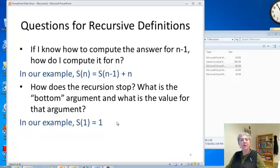And the other question is, how does the recursion stop? How do we hit bottom or get to the end or whatever you want to call it? And in our example, we have s of 1 equals 1, which is how we stop.